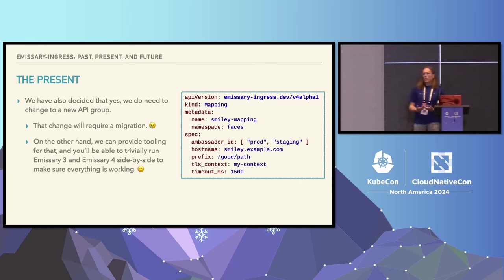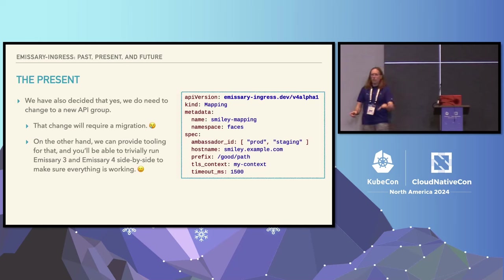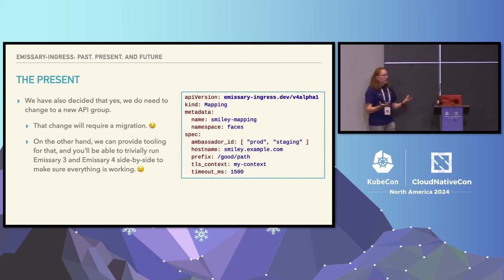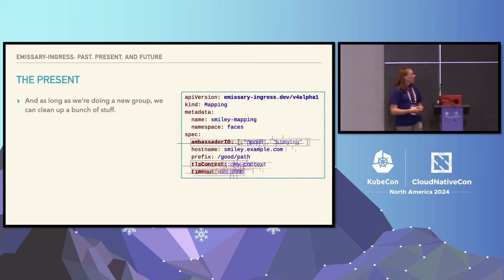On the one hand, switching the API group means you're talking about a migration instead of a conversion. On the other hand, it means you can run that conversion offline, get a bunch of YAML that you can look at, apply to your cluster, and it becomes really easy to run Emissary 3 next to Emissary 4 on the same cluster at the same time and make sure that everything is working before you turn Emissary 3 off — which was a huge concern when we were talking through all the other ways we could have done this.